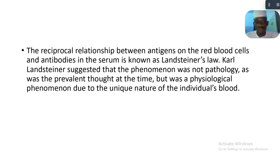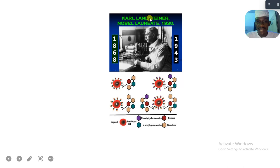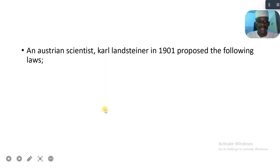If you want to watch the video on blood grouping, you could just scroll down our YouTube channel — we already have a video on blood grouping there. This is Karl Landsteiner that we are talking about, and he won the Nobel Prize in 1930. He was the one that postulated Landsteiner's Law. There are two Landsteiner's Laws. Landsteiner was an Austrian scientist who, in 1901, proposed the following laws.